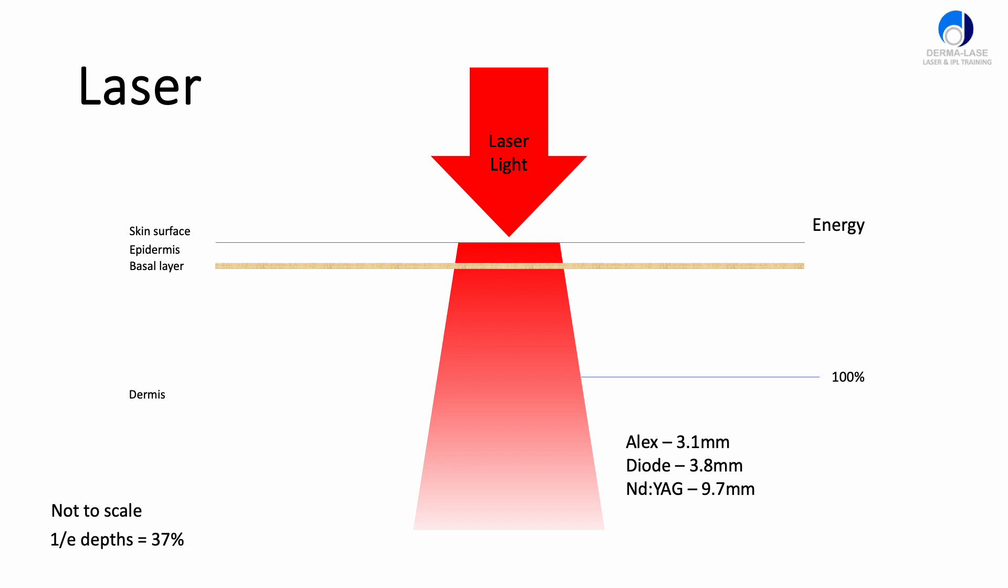The alexandrite laser which is a 755 nanometer wavelength penetrates about 3.1 millimeters. The diode laser that we use typically for hair removal, usually 808 or 810 nanometers, can penetrate a little bit further to about 3.8 millimeters. But the ND YAG laser with the 1064 nanometer wavelength penetrates the furthest, 9.7 millimeters, mostly because its absorption is so low in the constituents in the skin and its scattering is very much forward.